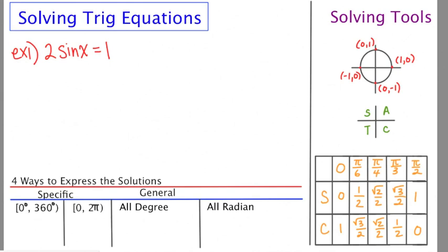The first example is 2 sin x equals 1. And the basic premise when you're solving a trig equation is to isolate the expression that contains the x or whatever the variable is. So in this case, we want to get sin x by itself. To do that, we've got to divide by 2, so that's pretty easy.